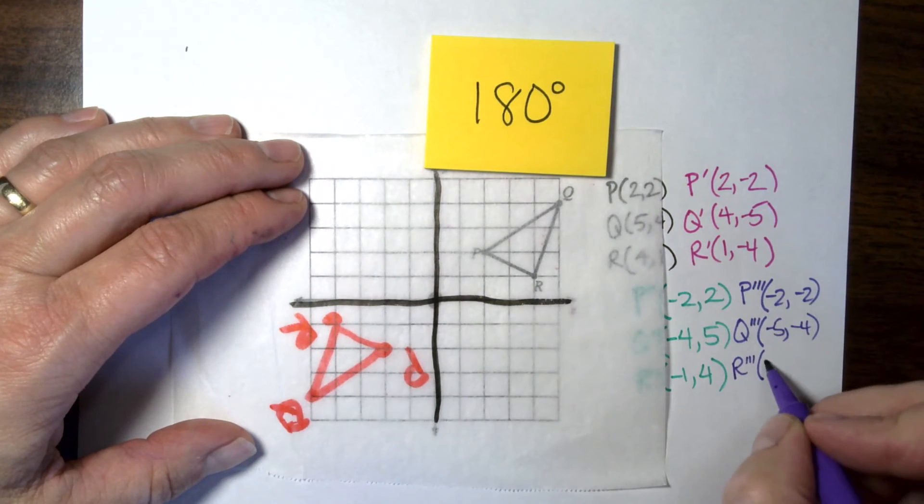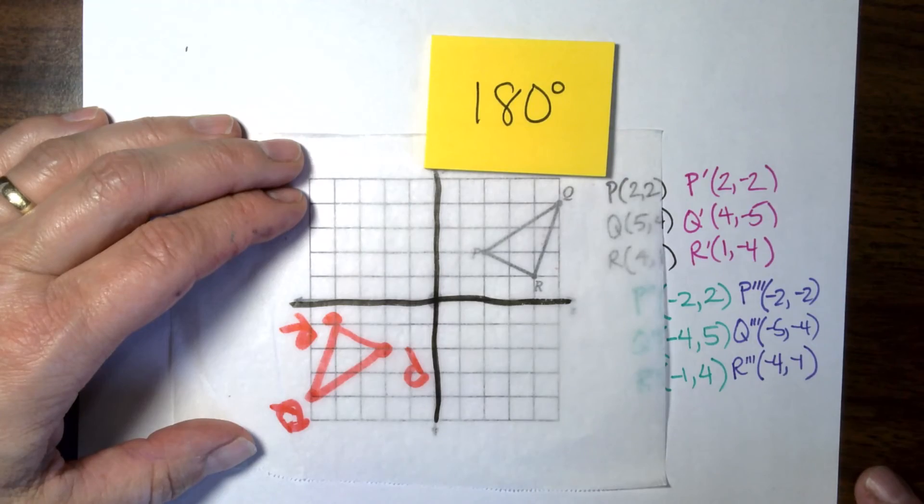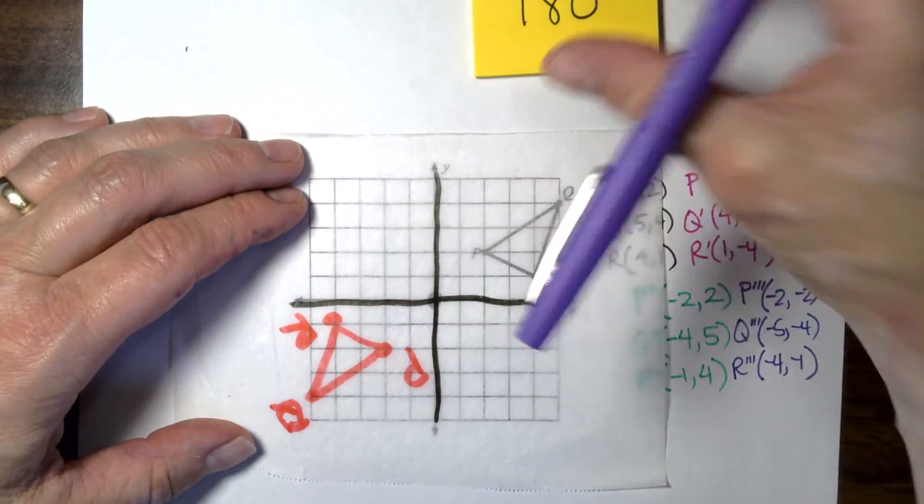And R triple prime is going to be negative 4, negative 1. And we are done with those rotations.